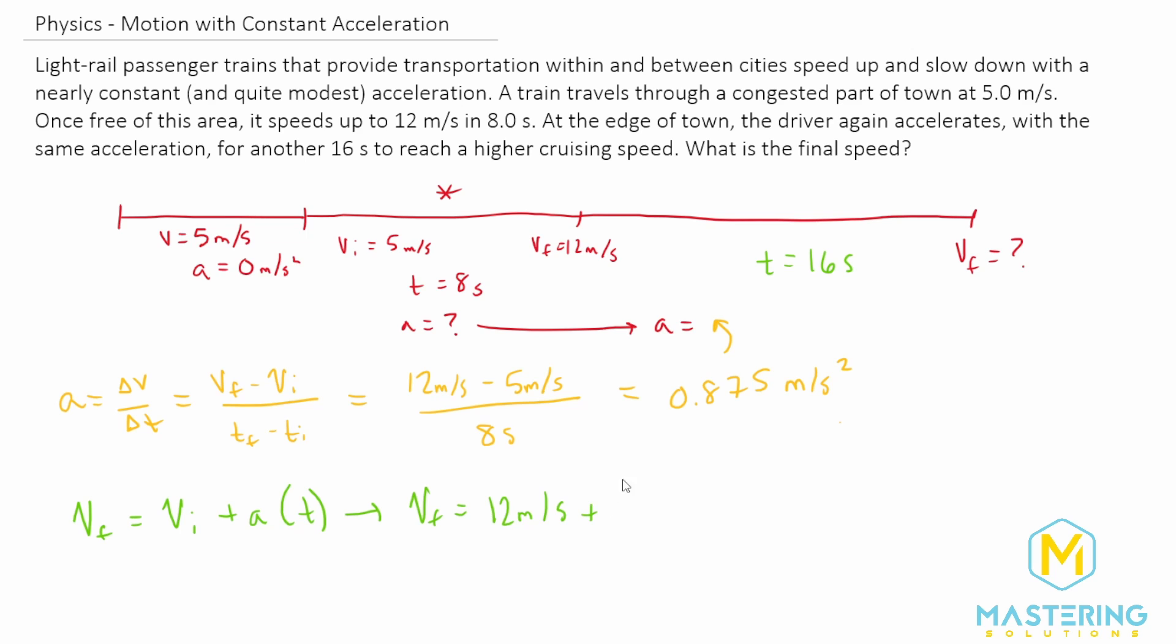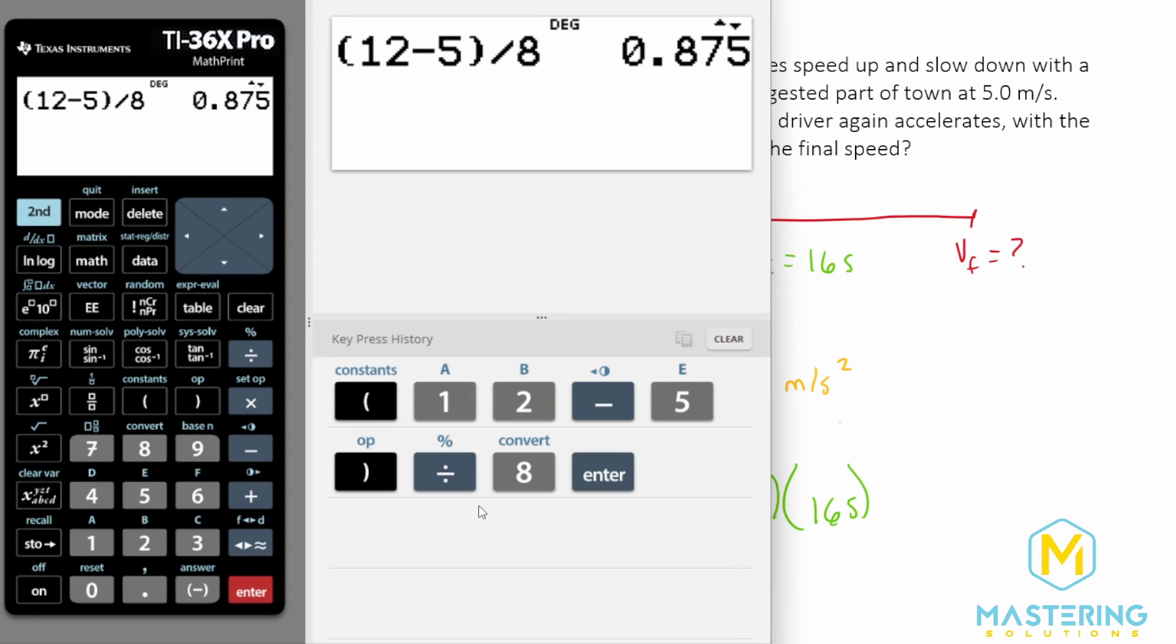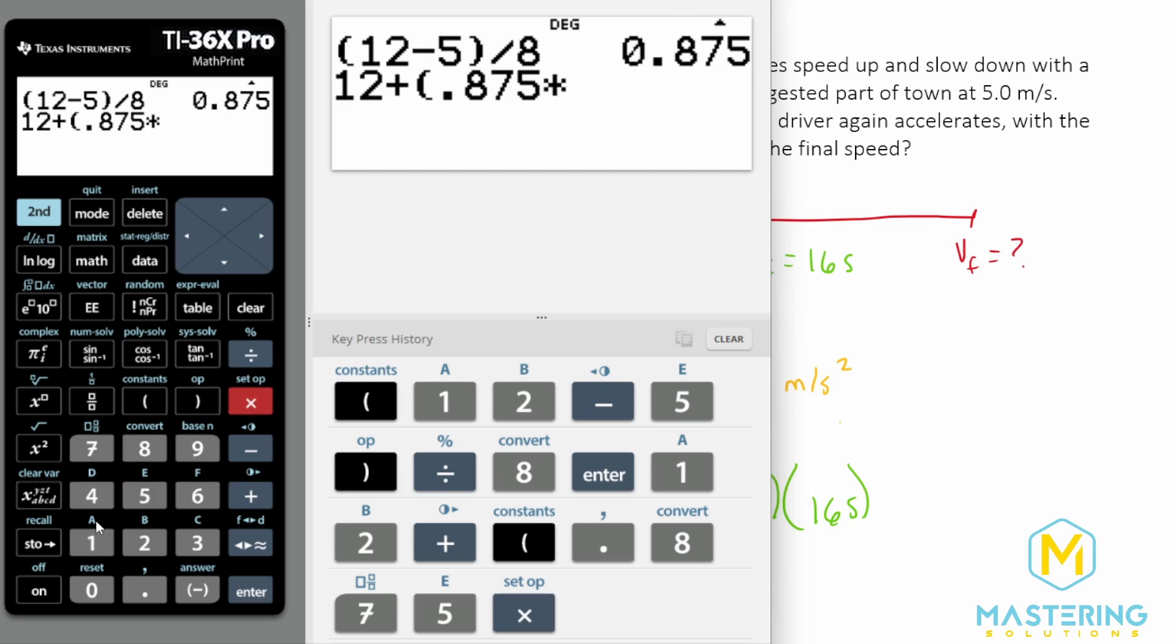Plus the acceleration, which we found was 0.875 meters per second squared, and then we'll be multiplying that by the time, which is 16 seconds for this section. So now we have 12 plus 0.875 times 16.